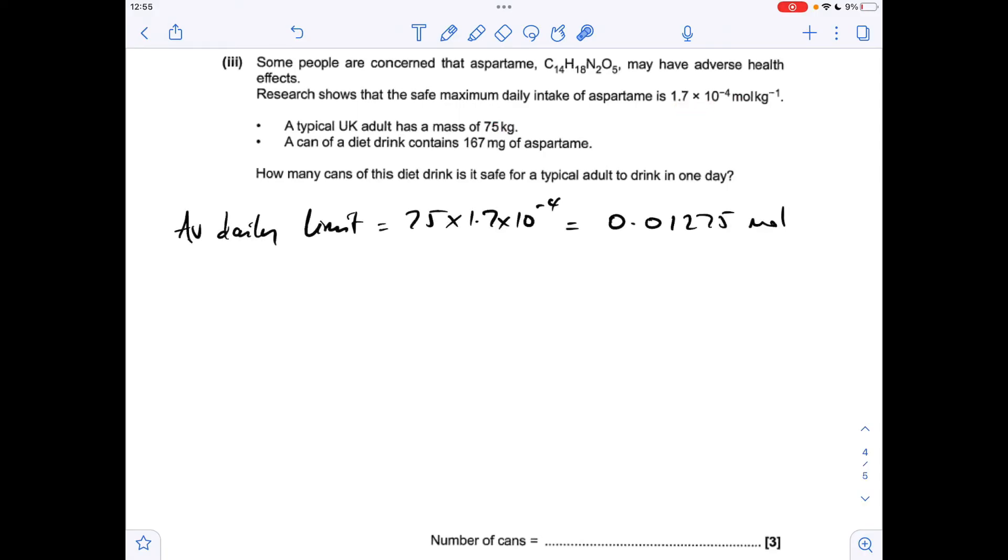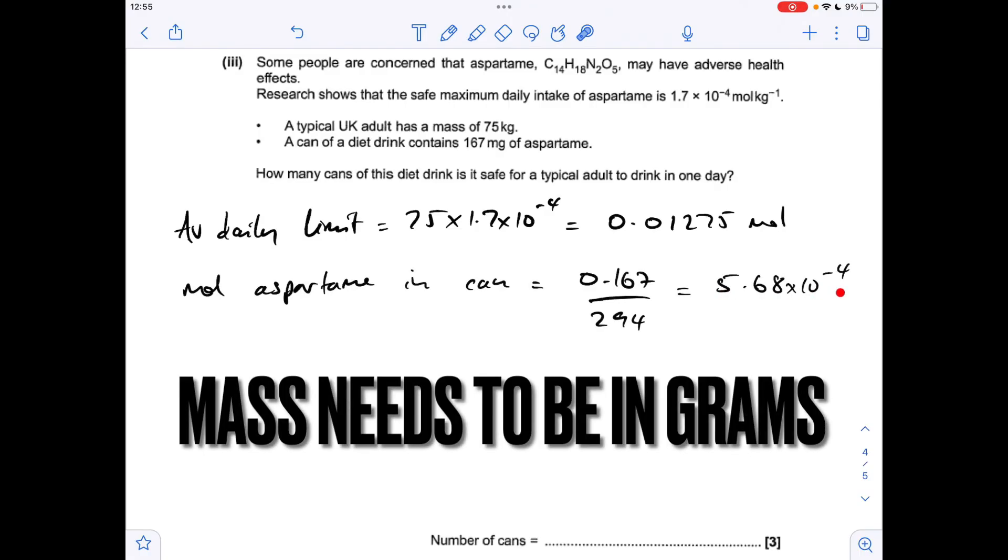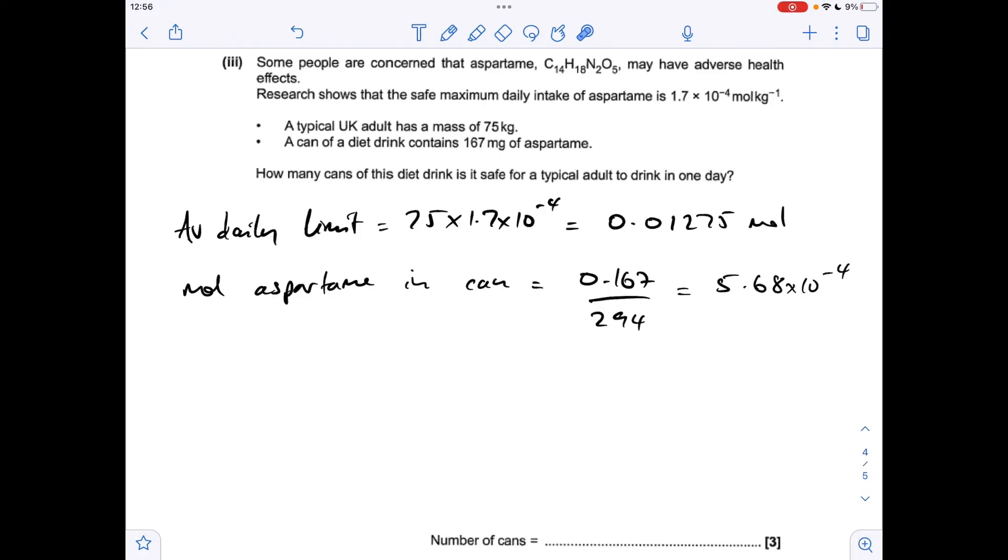Next thing I want to do is work out how many moles of aspartame are in a can of diet drink. So just mass over MR. That's how many moles of aspartame are in the can. So the maximum number of cans that you can drink safely is going to be the maximum number of moles divided by the moles per can. That's coming out at 22.45 cans. You could either say 22 cans or you could say 23 cans.